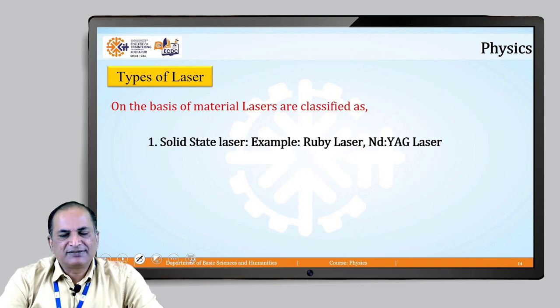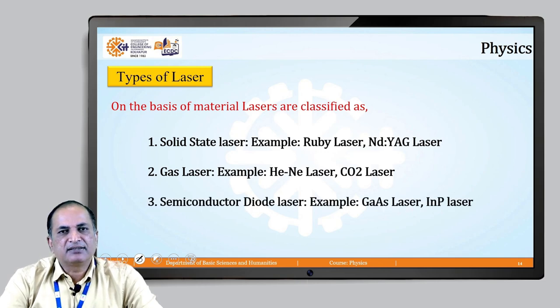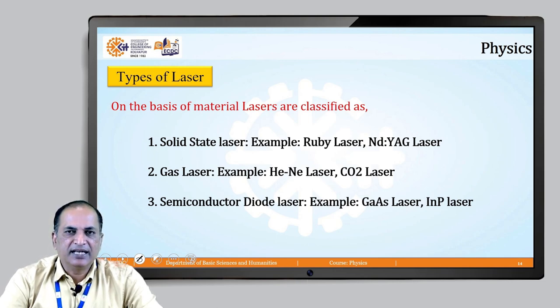We have solid state lasers, examples ruby laser, Nd:YAG laser, then gas laser, example helium neon laser, carbon dioxide laser and semiconductor diode laser, where semiconductor materials are used for the formation of laser like gallium arsenide laser, indium phosphide laser.